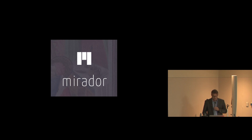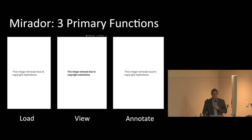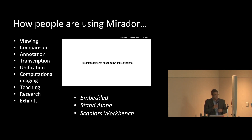Mirador has three primary functions: it can load content from institutions supporting IIIF around the world, it has deep zoom and pan viewing, and it has the ability to annotate content. But more than this, Mirador has become a very sophisticated scholarly workspace for comparison of content from around the world. It has been used for viewing, comparison, instructional and computational uses, as well as research and online exhibits.